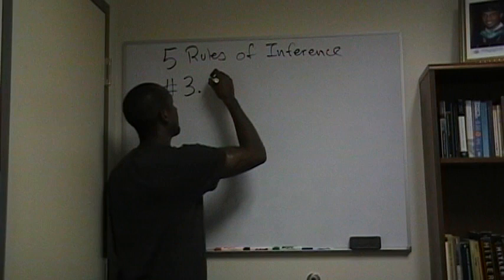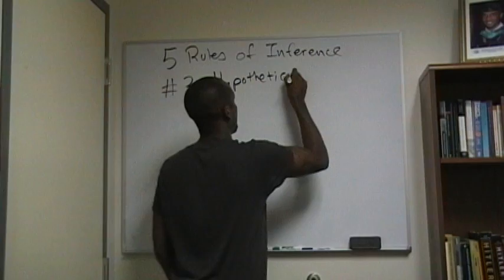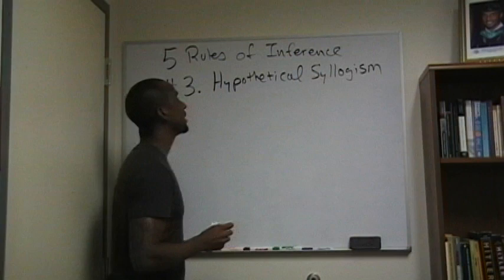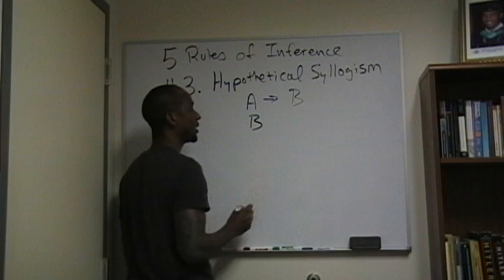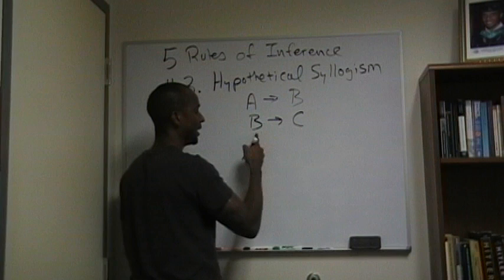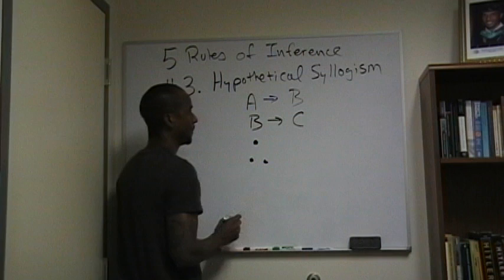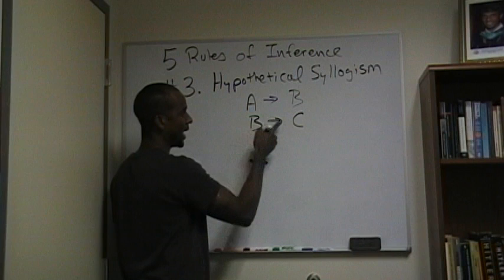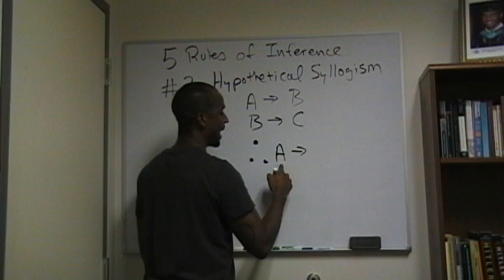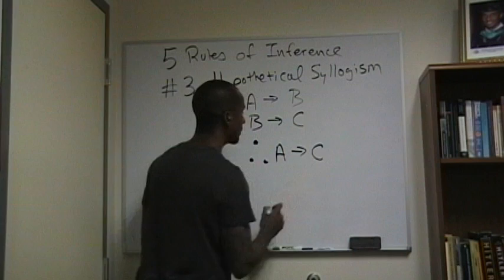Number three is known as hypothetical syllogism. It says: if A occurs, then B will occur. If B occurs, then C will occur. So if A, then B; if B, then C. You can see that B is sort of the link — the link between A and C. Therefore, if A happens, then C.